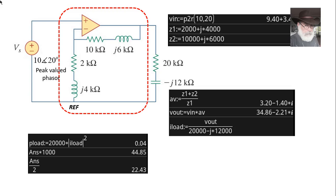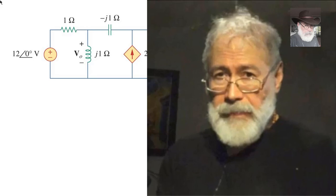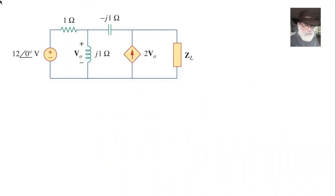But still, we need to divide by 2, because all of this story began with a peak valued phasor. So that 20 kilo ohm resistor is absorbing 22.4 milliwatts. And that is all for now. In our third video, we will be solving this exercise. Thank you.